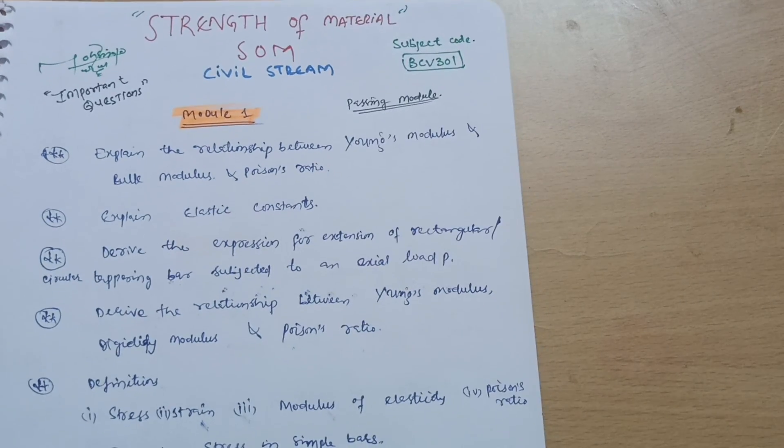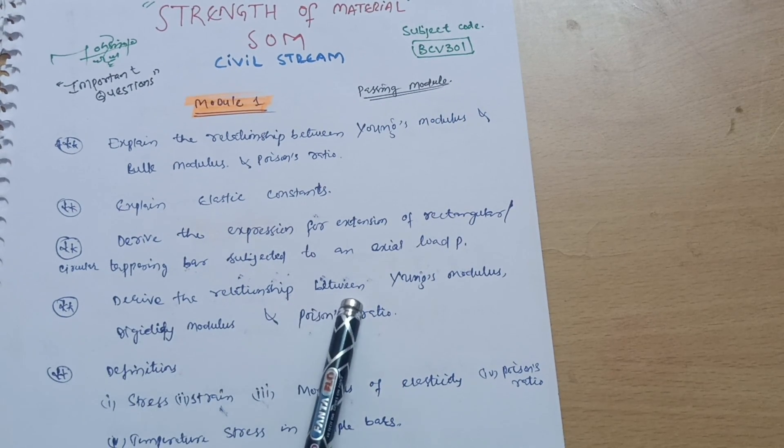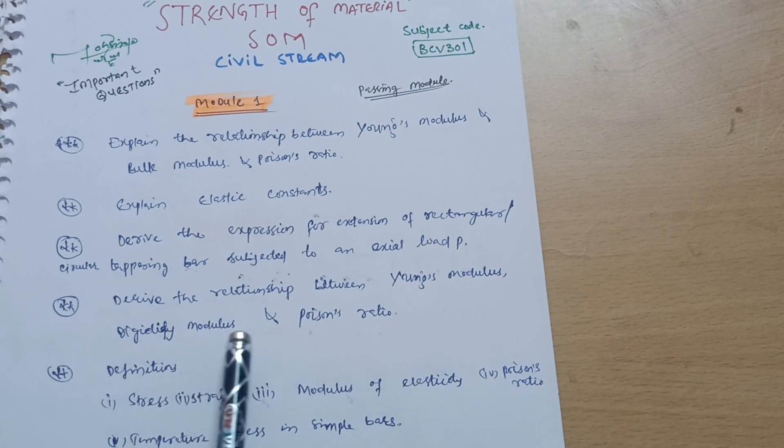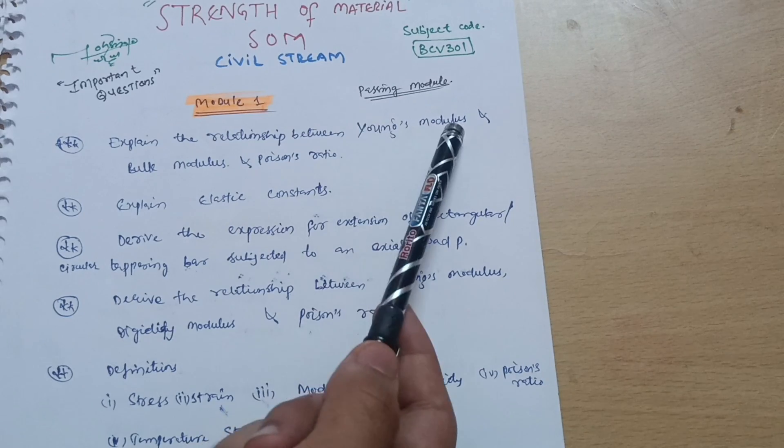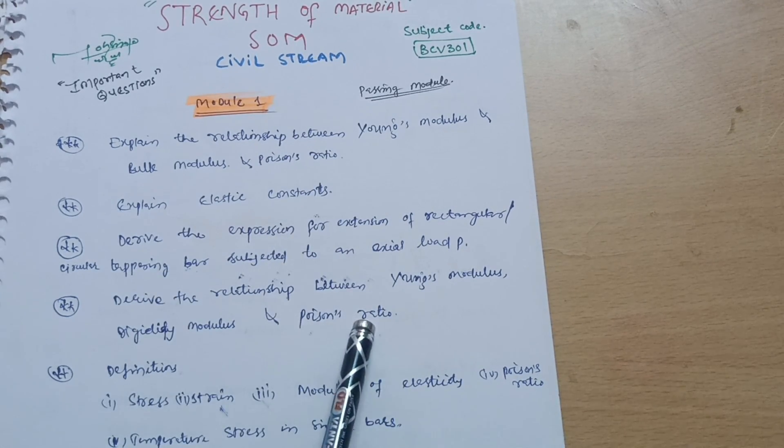Next is derive the relationship between Young's modulus, rigidity modulus, and Poisson's ratio. It was Young's modulus, bulk modulus, and Poisson's ratio; it is Young's modulus, rigidity modulus, and Poisson's ratio. This may be a derivation as well.